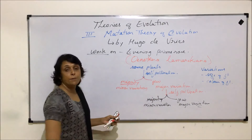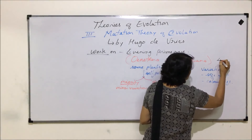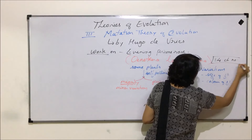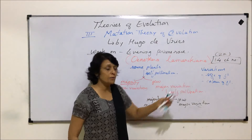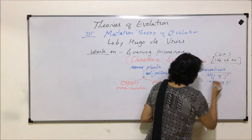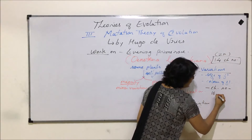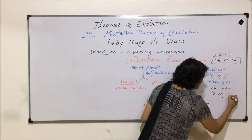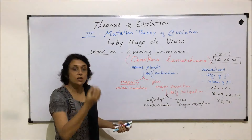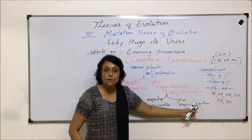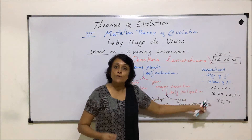The normal Oenothera lamarckiana has a diploid chromosome number of 14. The plants showing major variations had different chromosome numbers — such as 16, 20, 22, 24, 28, 30, and so on. This sudden major difference from the parent variety was actually due to a sudden change in the number of chromosomes.